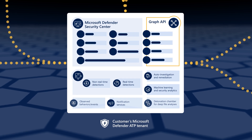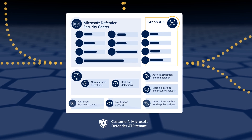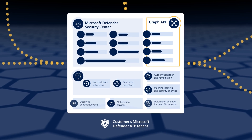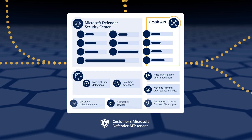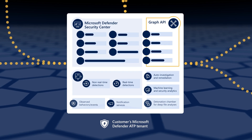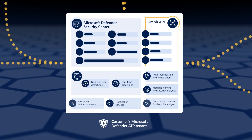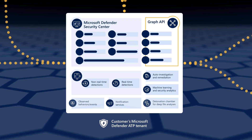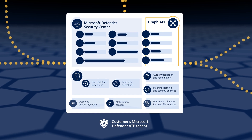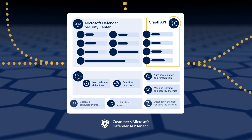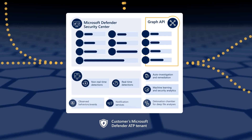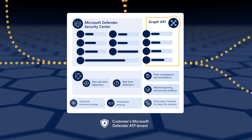Within each tenant is a rich Behavioral Indicators of Attack, or IOA dictionary. This includes heuristics, behavioral rules, machine learning, and anomaly detection algorithms that detect suspicious, attack-related events in the sensor data.